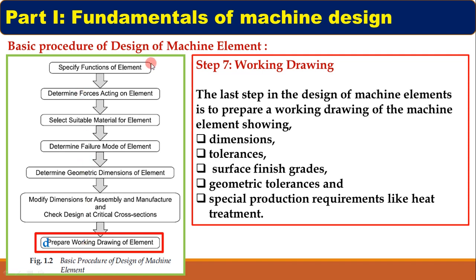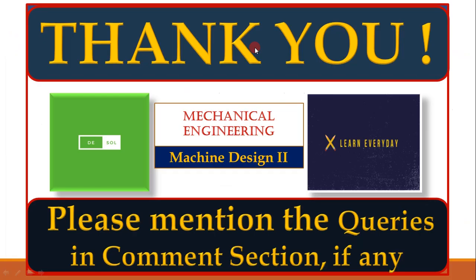These are the steps for designing a machine element. To summarize: the procedure of machine design covers the design of a complete machine including multiple parts — for example, a gearbox. The procedure of design of machine element covers the design of one part of that machine — for example, a shaft. If you have any doubt or query, please mention it in the comment section.